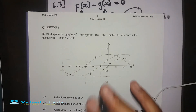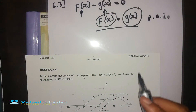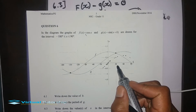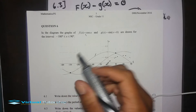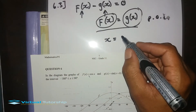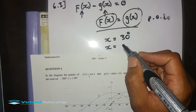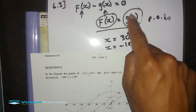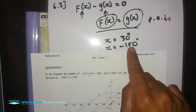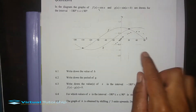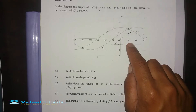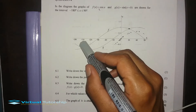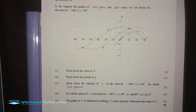We need the x values where the graphs intersect. Take a guess — yes, it's going to be 30 and minus 150. So x equals 30 degrees, and x equals minus 150 degrees. Whenever x equals 30, f of x is equal to g of x, and whenever x equals minus 150 degrees, f of x is equal to g of x, as seen from the given diagram.